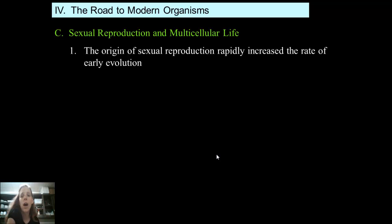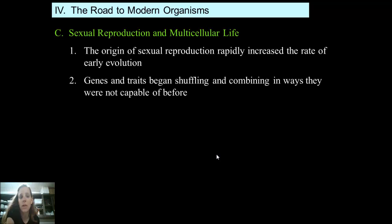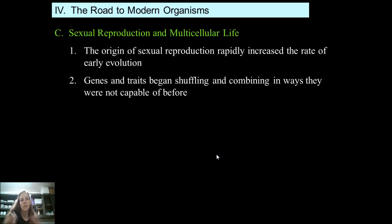Sexual reproduction and multicellular life also helped the evolution of complex organisms really take off. The origin of sexual reproduction rapidly increased the rate of evolution because it allowed organisms to combine their genes. The genes creating the best physical traits allowed the organism to be best suited for its environment, able to thrive, reproduce, and pass on those genes. So genes and traits began shuffling and combining in ways that were never possible before.